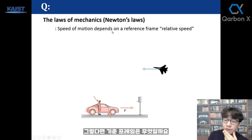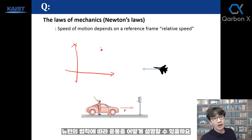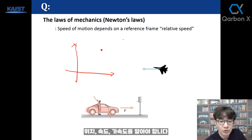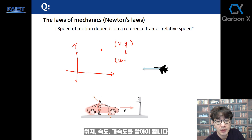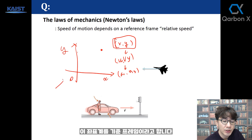What is the reference frame? To describe motion according to Newton's law, we need to know position, velocity, and acceleration. To define position, we need to have a coordinate system. This coordinate system is called a reference frame.